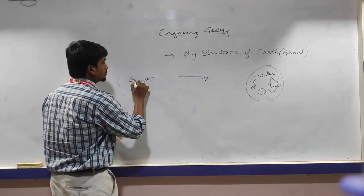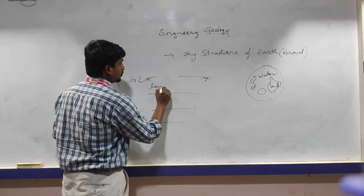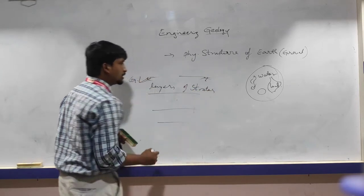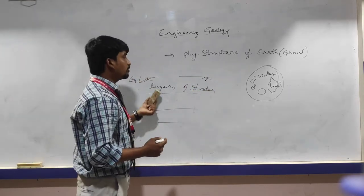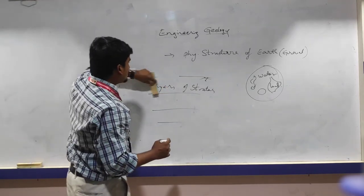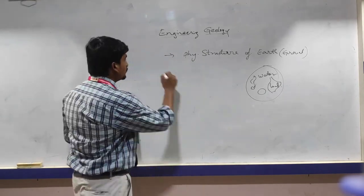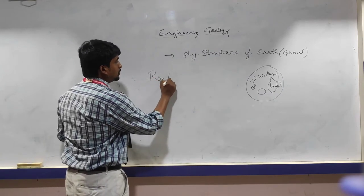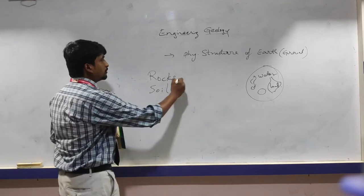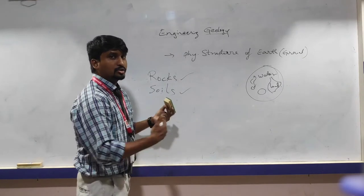This may be the ground level, and you have different layers of strata beneath it. How these strata are formed and what are the types of strata — those things you can learn. Also, the ground consists of rocks and soils. Different types of rocks and different types of soils are present on earth.